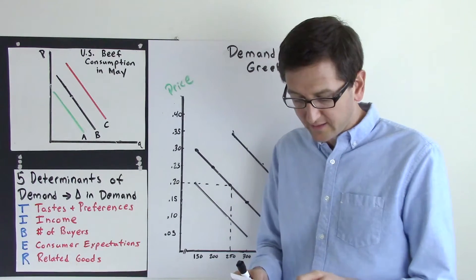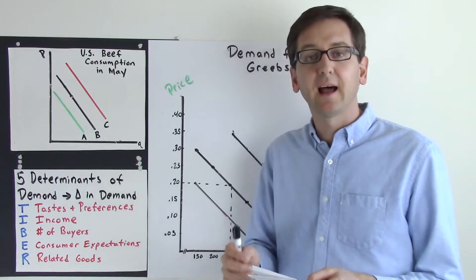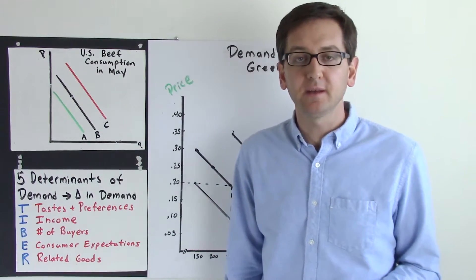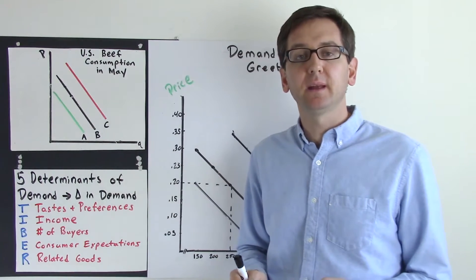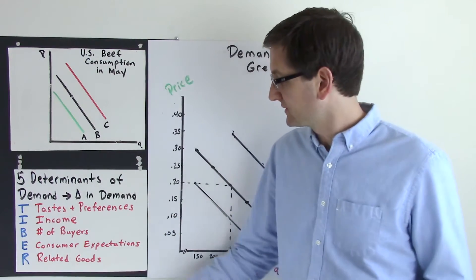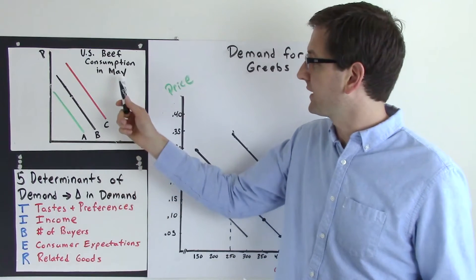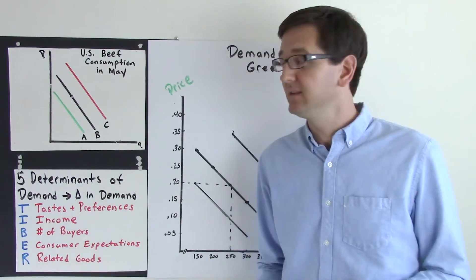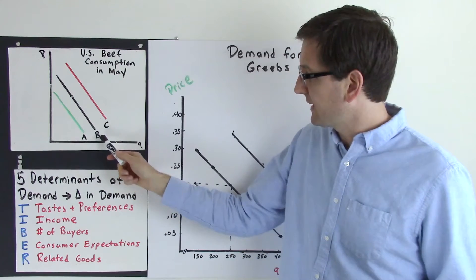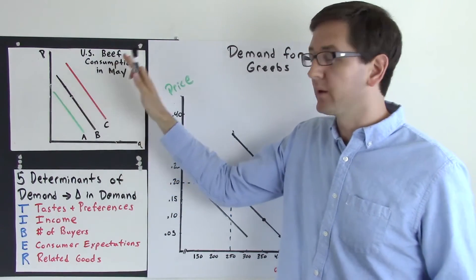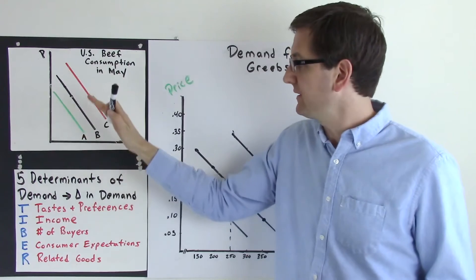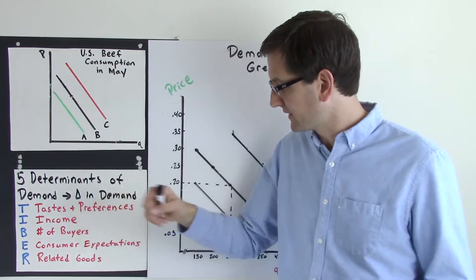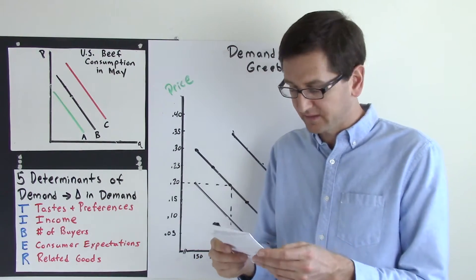Number of buyers: a headline might say 'Millions of immigrants swell the US population.' More people in a population means more consumers, increasing the number of buyers for our product — in this case, people who eat beef. That would shift our demand curve from B outward, showing an increase in demand for beef from B to C, because the number of buyers has increased.